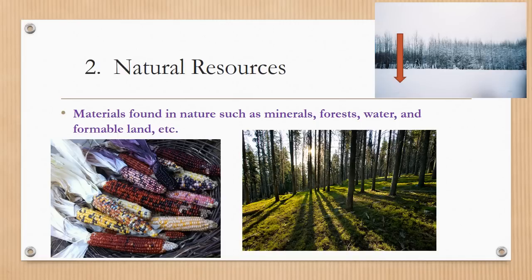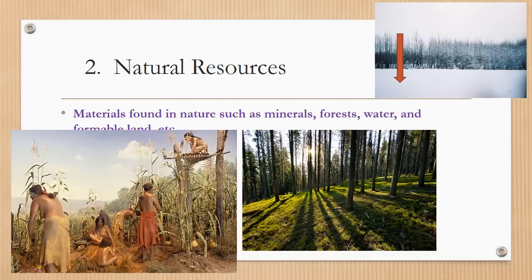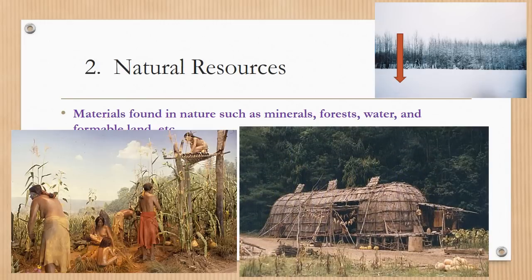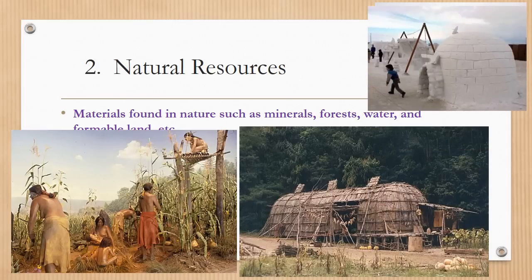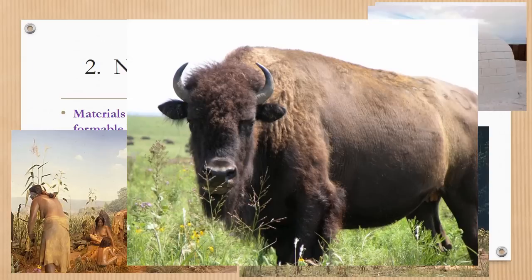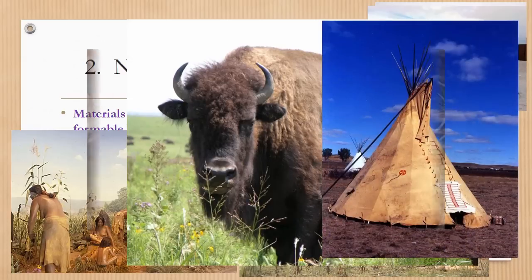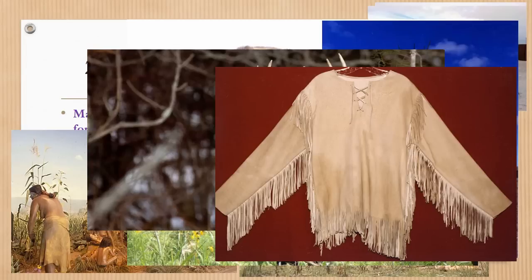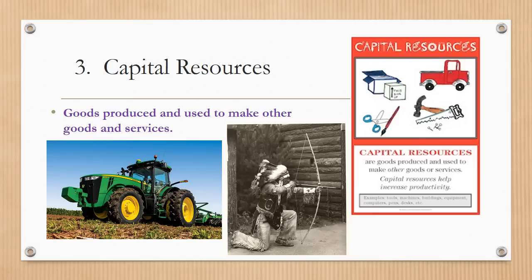Number two, natural resources are materials that are found in nature, such as minerals, forests, water, and farmable land. Corn is a natural resource harvested by Native Americans to eat. The forest is a natural resource — those trees would have been used to create shelter. Snow is a natural resource that could be packed together to make an igloo. A buffalo is a natural resource used to make a teepee out of its hide. A deer is a natural resource used for deerskin clothing. These are all natural resources turned into a product used by man.